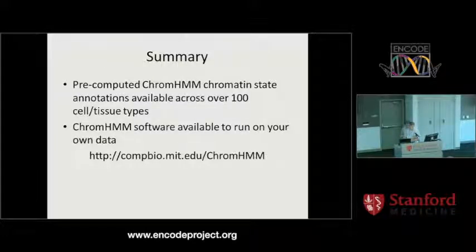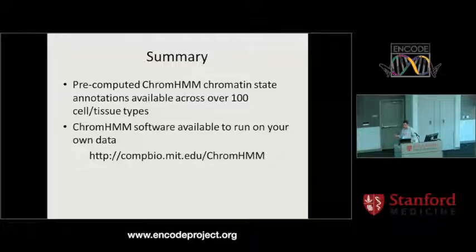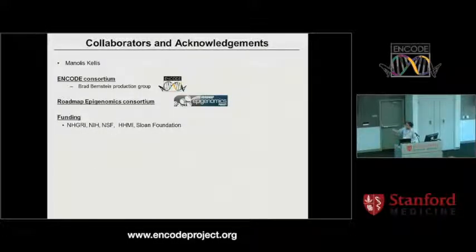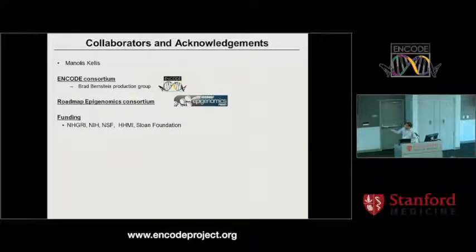There's also OverlapEnrichment, which allows you to rerun enrichments and add additional files not preloaded into the input coordinate directory. Similarly, NeighborhoodEnrichment can be rerun after segmentation with a set of anchor positions to get positional plots. You can also reorder the states of the model if you prefer a different ordering than ChromHMM's default. In summary, I presented a method for annotating genomes by integrating multiple epigenetic marks. ChromHMM has been applied to more than 100 different cell and tissue types; those annotations are available on the UCSC genome browser and the Roadmap portal. The ChromHMM software is available for you to run on your own data.